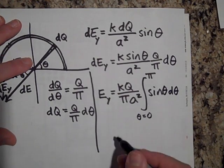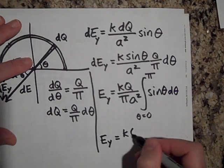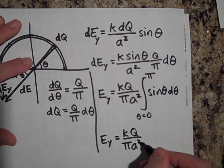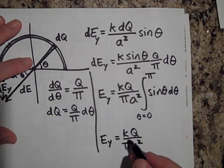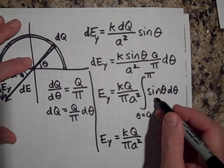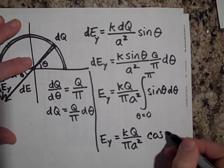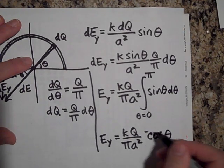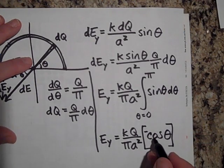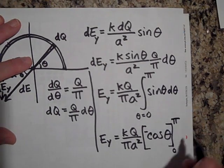Okay. So let's do that integral. So E_Y is equal to KQ all over pi A squared. And then when I take this integral, I'm thinking that that's going to go to cosine of theta. And I think that I want that to be a negative cosine of theta. Let's see. Take that derivative and see if that, sure enough, that turns into sine of theta. That's all good.